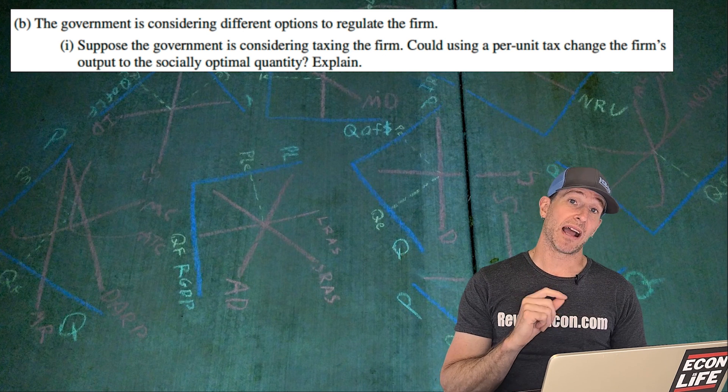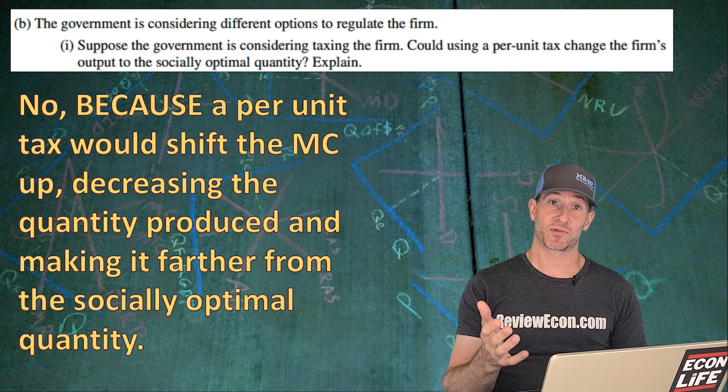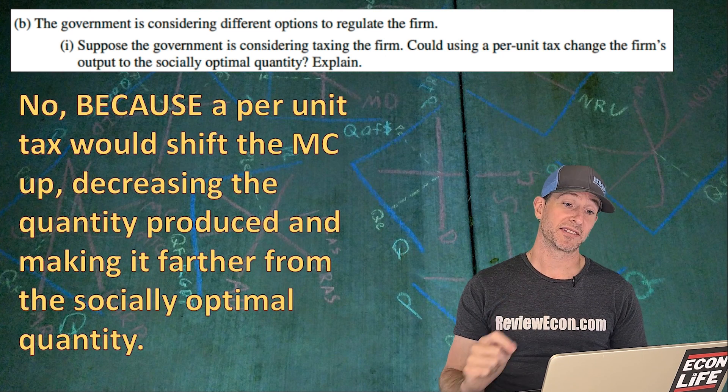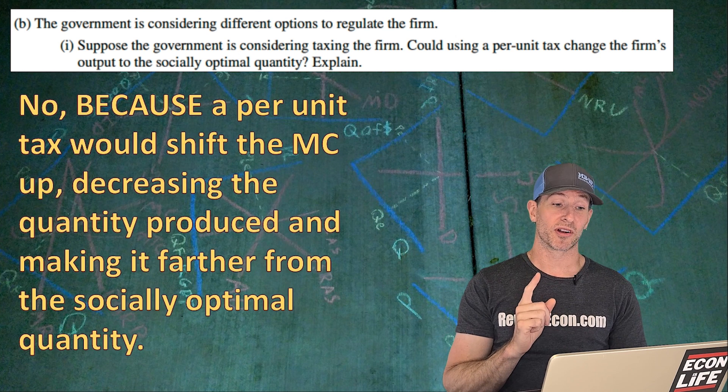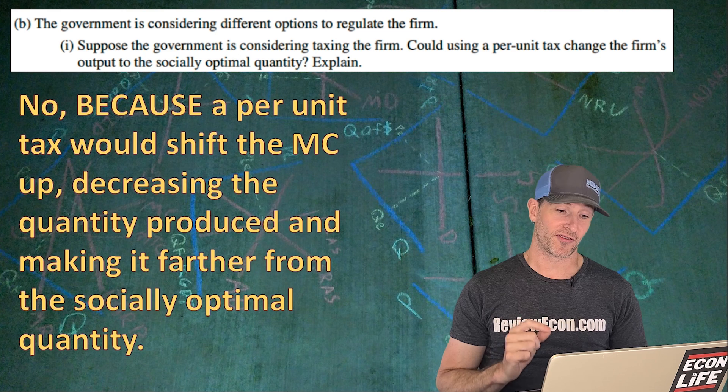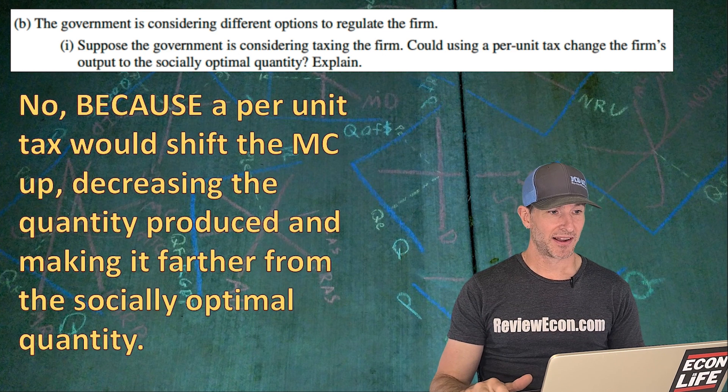So remember, monopolies already underproduce, and if we put a tax, that's just going to make things worse. So a per unit tax would just make things worse. No, because a per unit tax would shift the marginal cost upward, which would decrease the quantity produced and make it farther from the socially optimal quantity, and it would actually increase deadweight loss as a result.